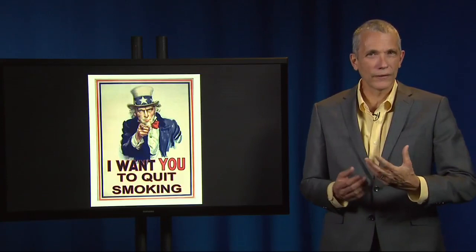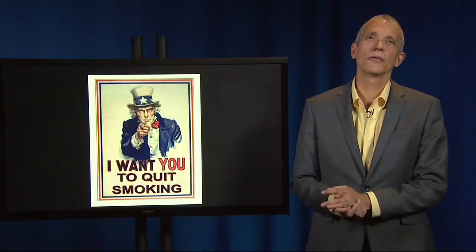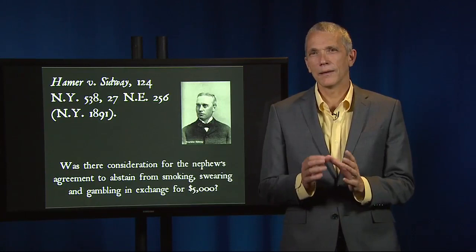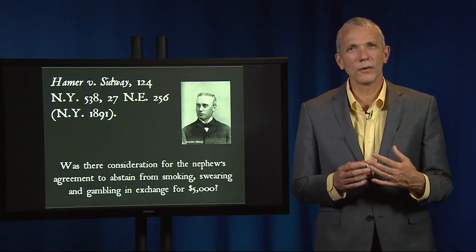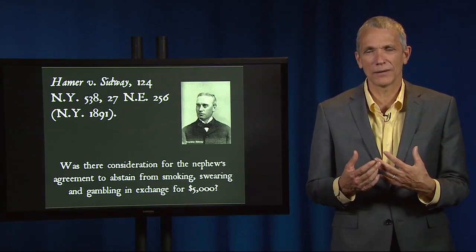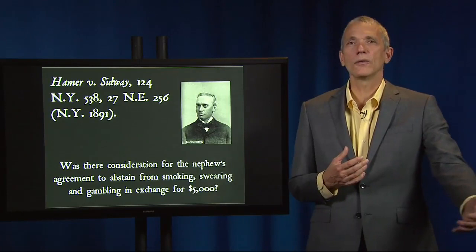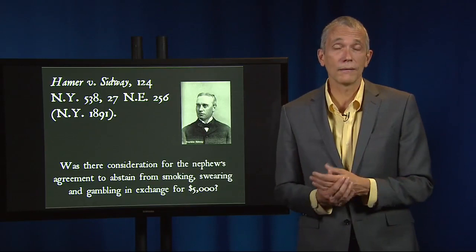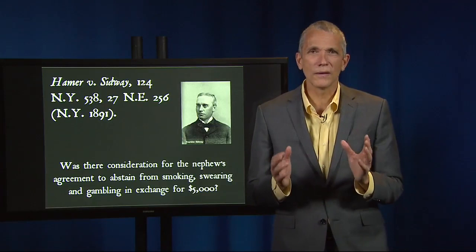On his 21st birthday, the nephew requested the $5,000 and the uncle told him that he'd have the money certain, but that it would be held from him until the uncle thought the nephew was capable of taking care of it. After the uncle's death, this suit was brought by Louisa Hamer, the assignee of the nephew after several mesne assignments — intermediate assignments. Franklin Sidway was the executor of the uncle's estate, claiming that the estate didn't have to pay the $5,000.